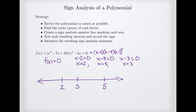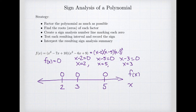We're going to use those roots to mark down our sign analysis number line. I've created a number line and marked each of my three roots: 2, 3, and 5. I'll consistently label x values below the number line and the sign of the function above. The function has a value of zero at each of these three points. This creates four intervals: minus infinity to 2, from 2 to 3, from 3 to 5, and from 5 to infinity.